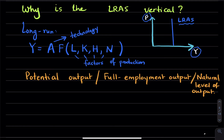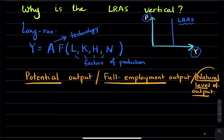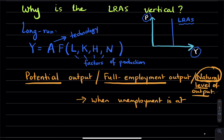The long-run aggregate supply curve shows the level of production sometimes called potential output, full employment output, or the natural level of output. Since in the short run output can temporarily be above or below this level, the long-run aggregate supply curve represents the natural level of output. We call it the natural level of output because it is the amount of output produced when unemployment is at its natural rate.